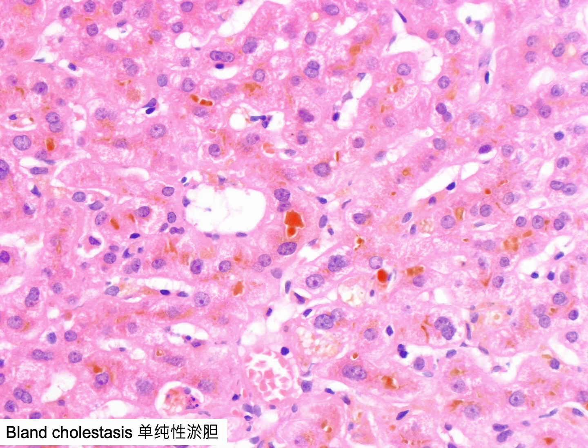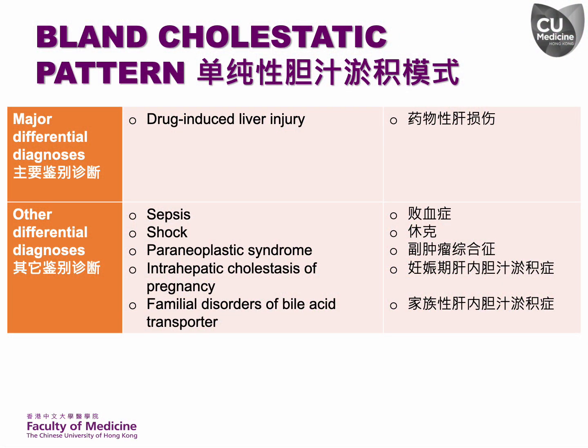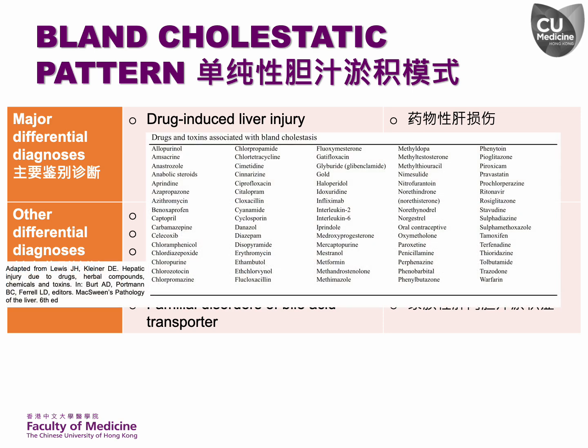Significant hepatocellular and canalicular bilirubinostasis is observed, occurring without notable inflammatory activity. Drug-induced liver injury is the major consideration for the bland cholestatic pattern. Other differential diagnoses include sepsis, shock, paraneoplastic syndrome, intrahepatic cholestasis of pregnancy, and familial disorders of bile acid transporters. This table highlights those drugs and toxins inducing bland cholestasis.